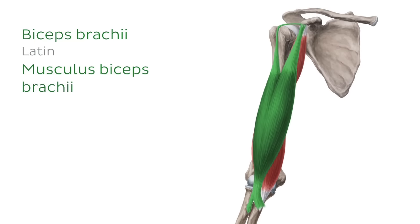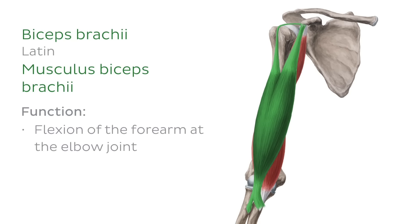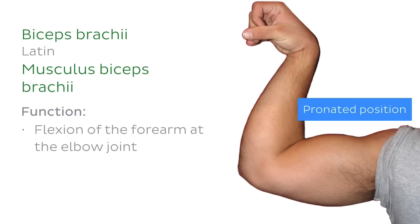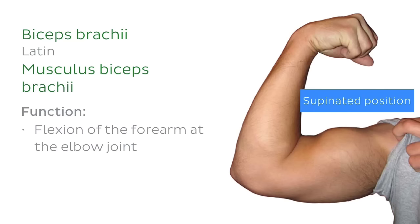What does the biceps brachii do? This muscle has several functions. It's a powerful flexor of the forearm at the elbow joint, which involves decreasing the angle between the arm and the forearm. It's important to note that when the forearm is in the pronated position, with the palms facing down, the biceps brachii loses its mechanical advantage, meaning its involvement in flexion of the forearm at the elbow joint is more limited than when the forearm is supinated.